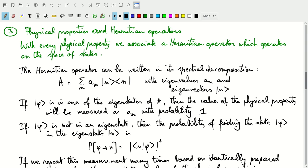If phi is not an eigenstate of the physical property operator that we want to measure, then there's going to be a probability of finding that state phi in the eigenstate n that is associated with the physical property A.